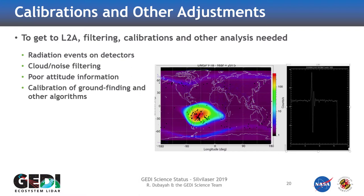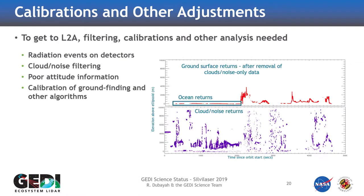And then you do have to do the normal cleaning up of your dataset to get rid of noise and clouds. This is the original dataset, and then we have to get rid of the clouds. Now we have the ocean returns. We also have to get rid of the atmospheric noise and the dark noise from the detector, and this is the ground surface. We have to have algorithms that work over a variety of conditions for all our datasets, and we're getting billions of waveforms. This becomes a time-consuming process.